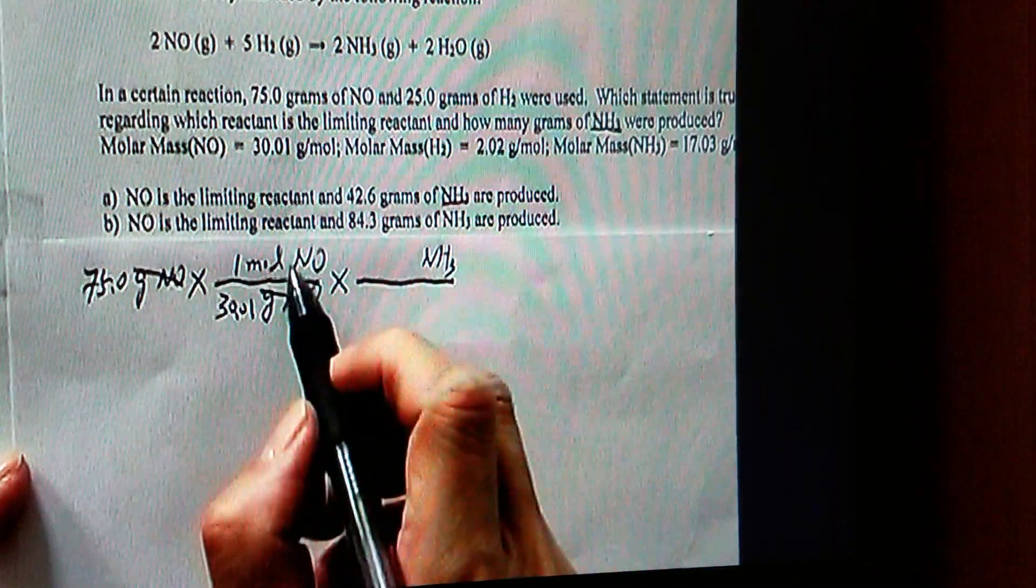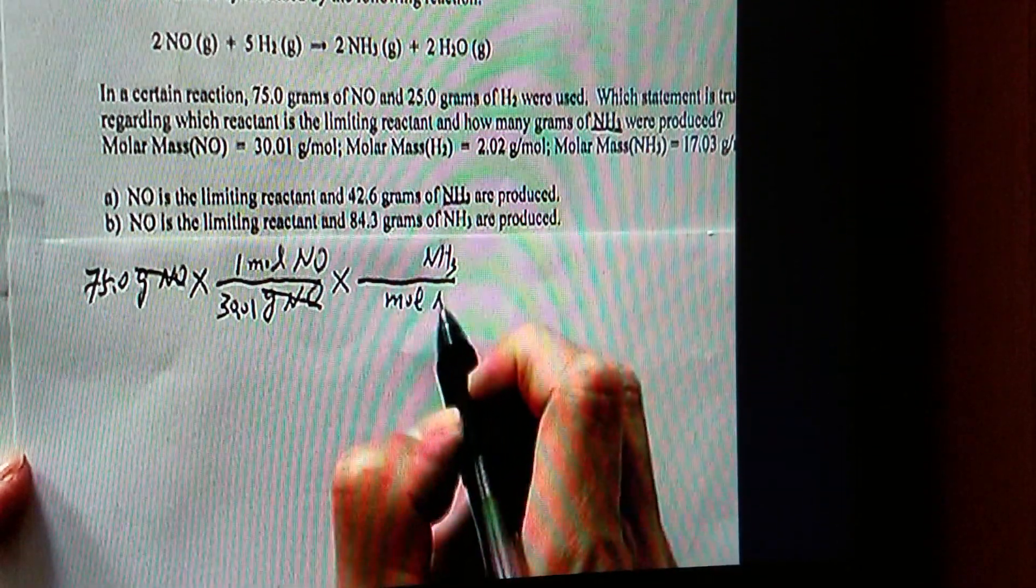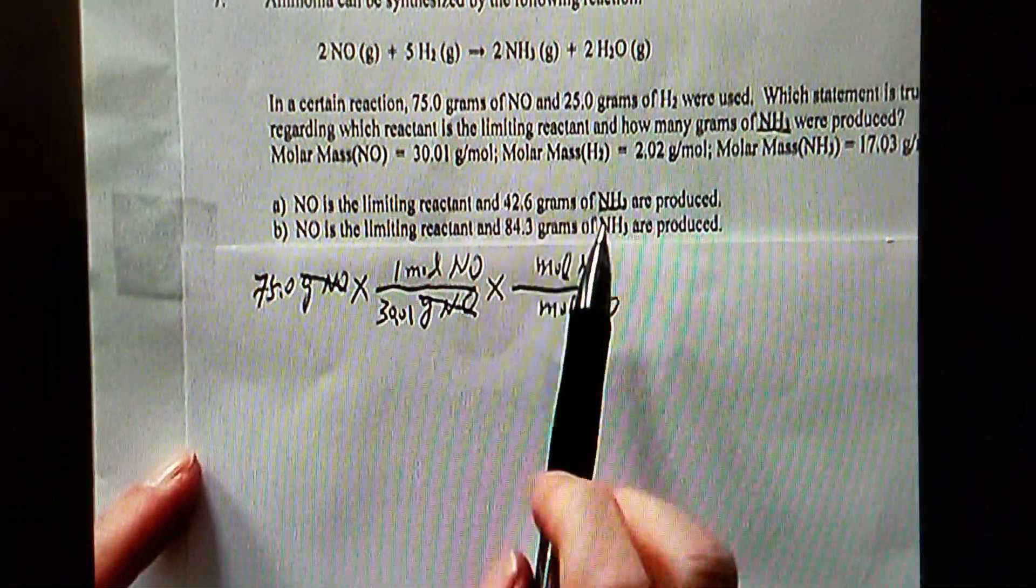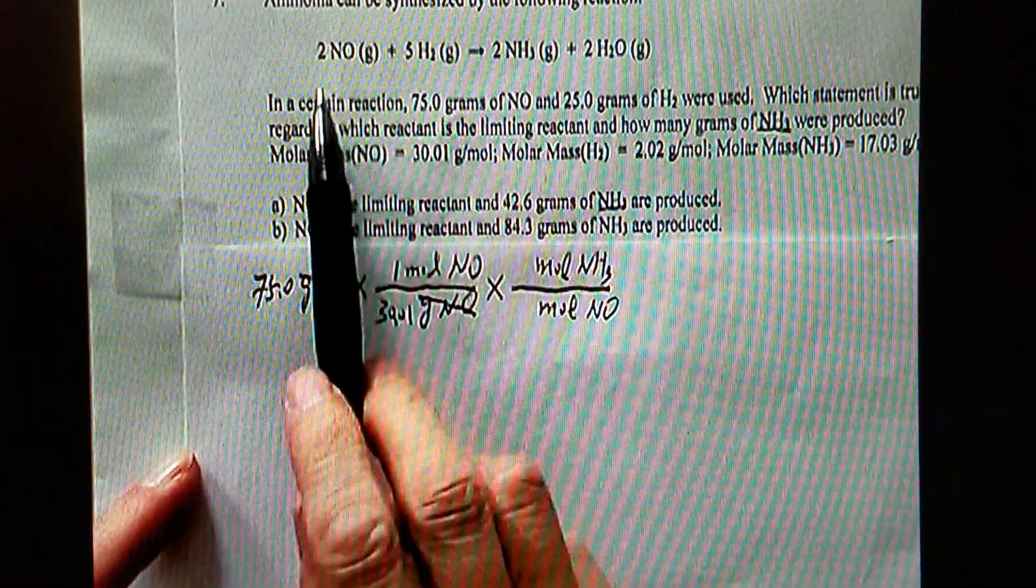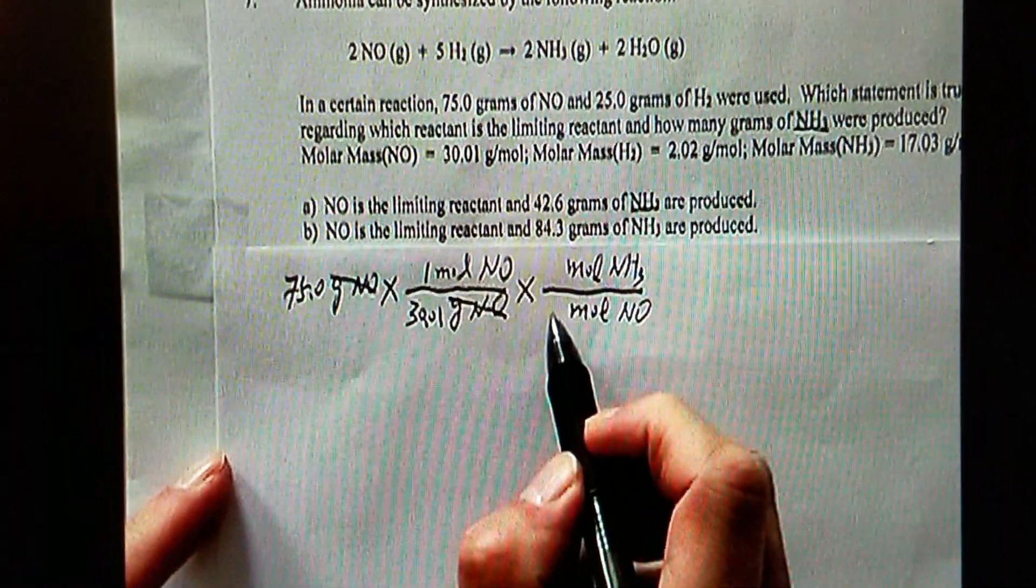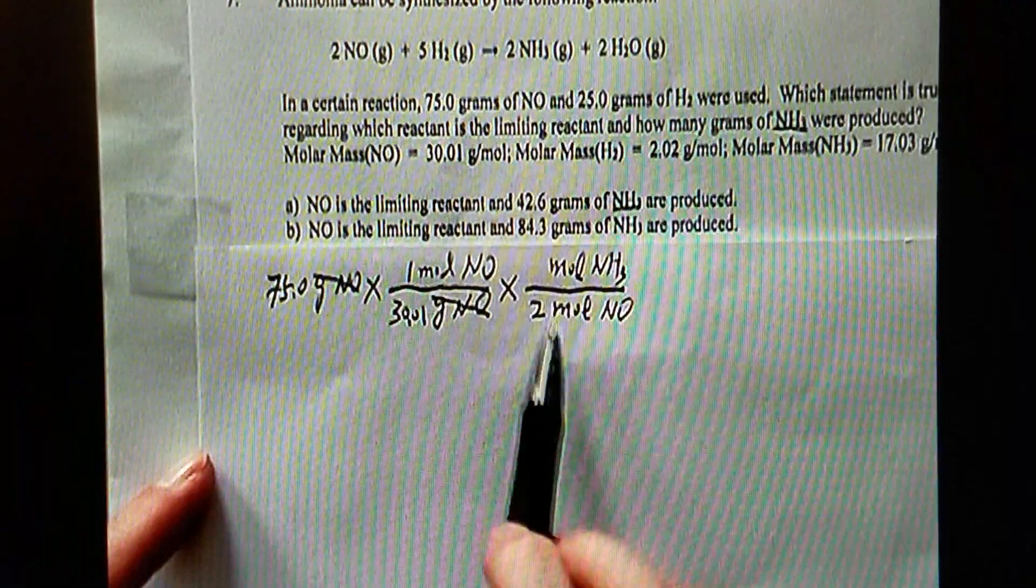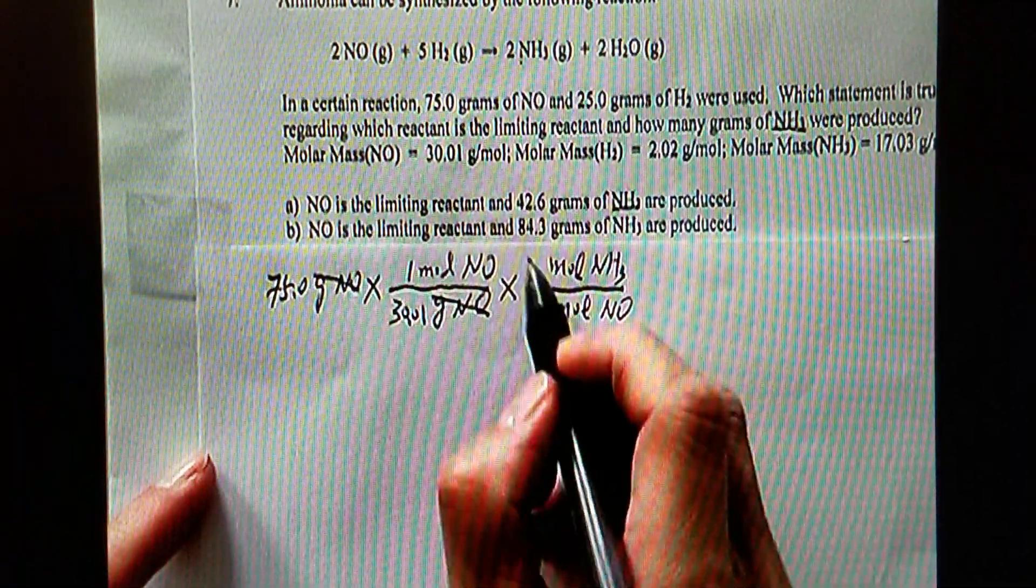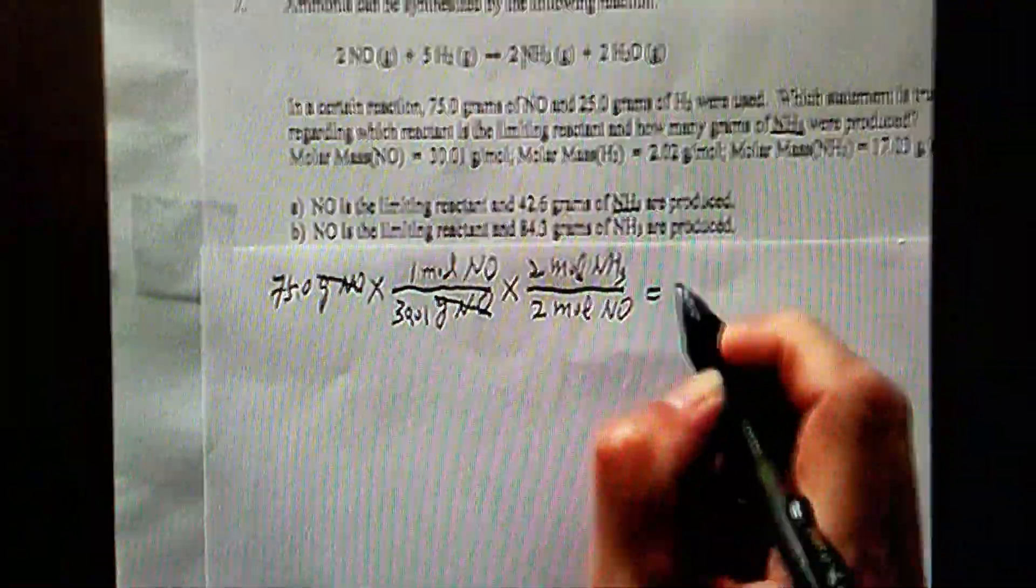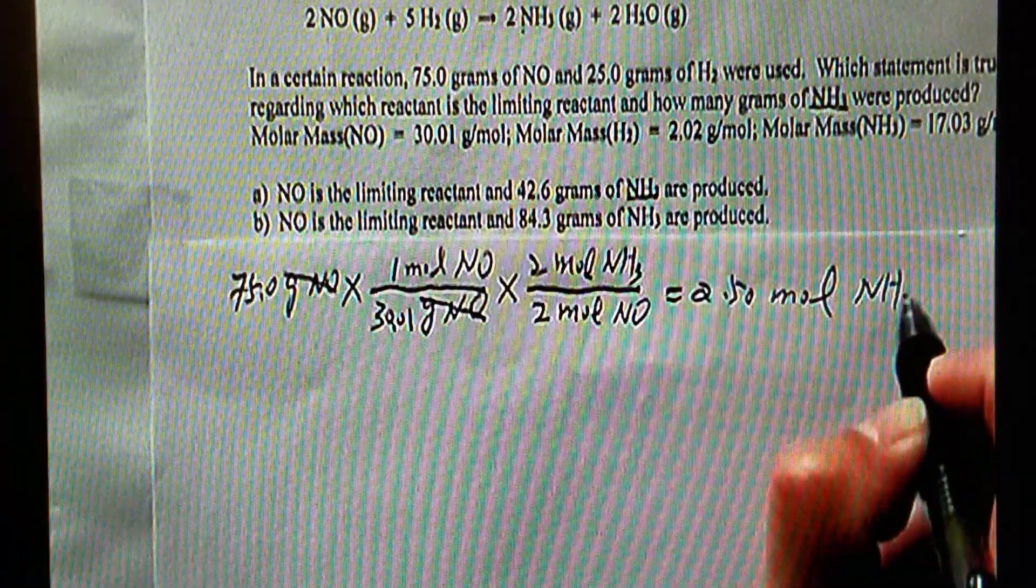Now we are converting from moles of nitrogen monoxide to moles of ammonia using the coefficient in the balanced equation. Nitrogen monoxide, that's two. Ammonia, that's another two. This should be about 2.5 moles of ammonia.